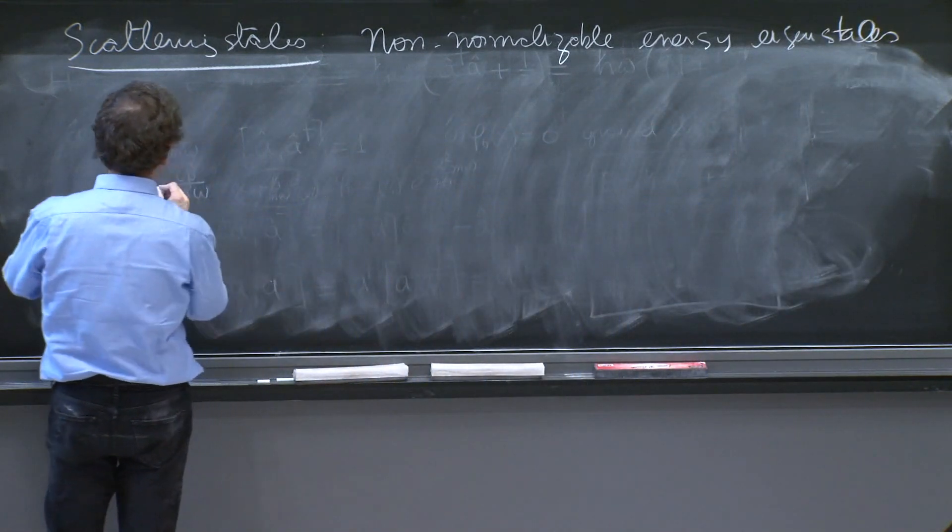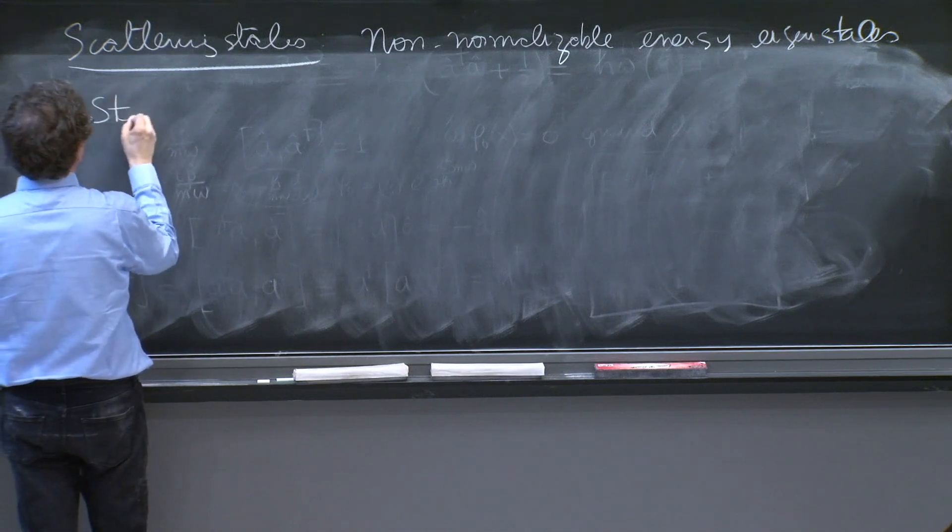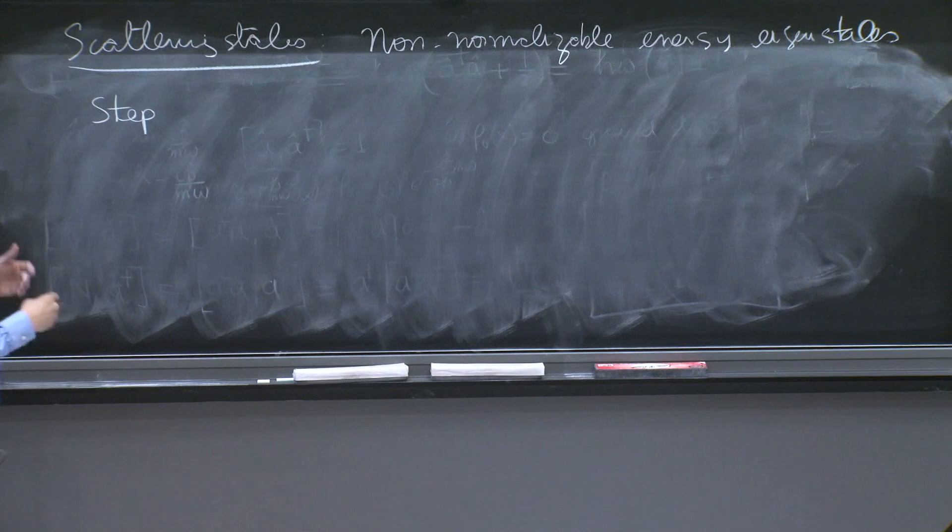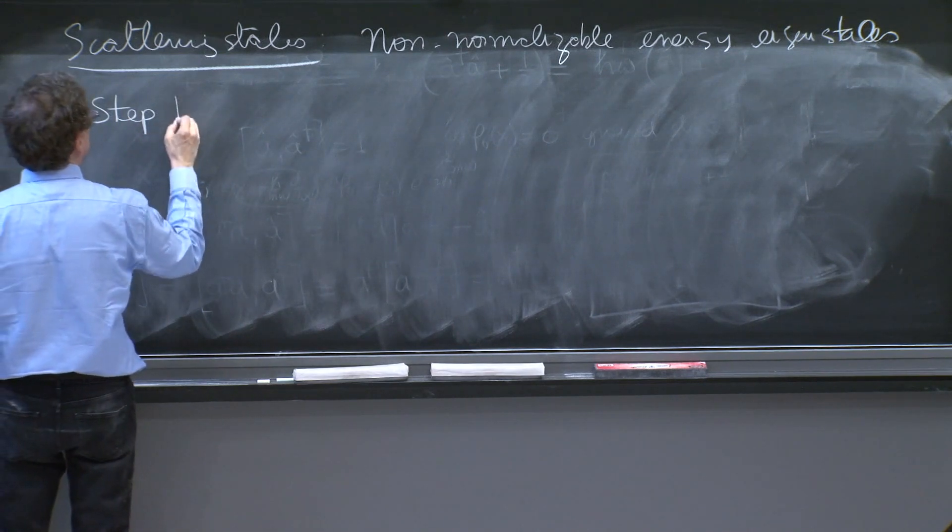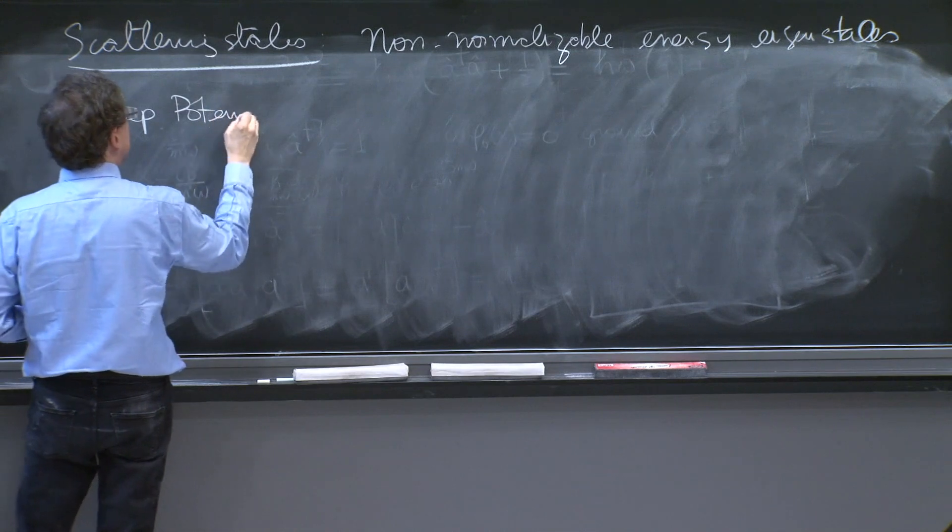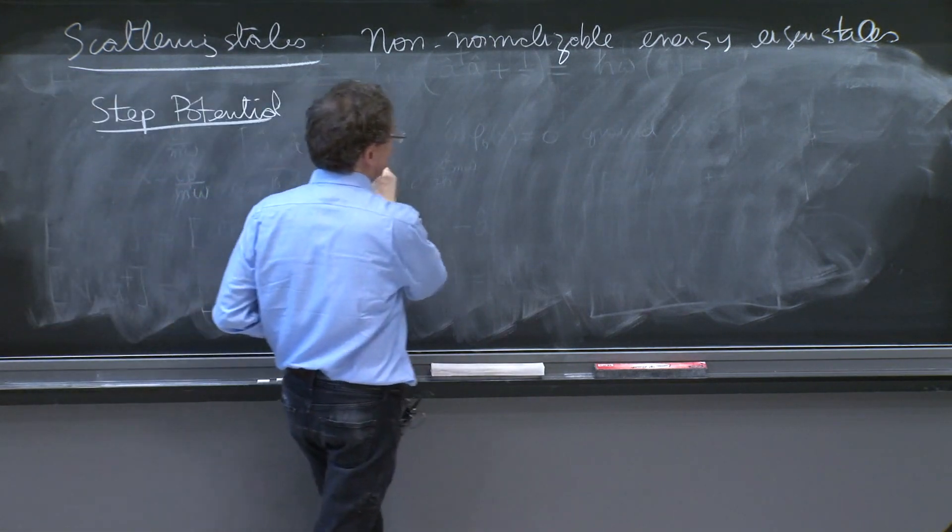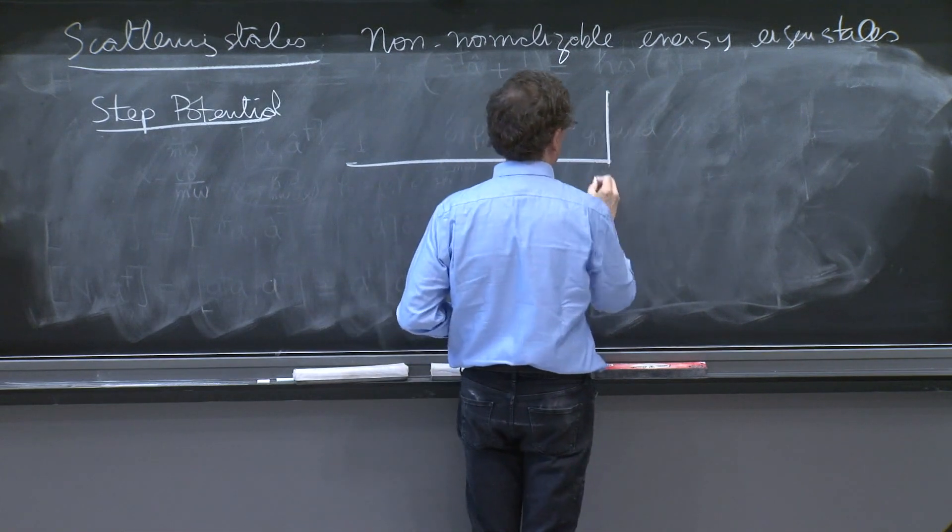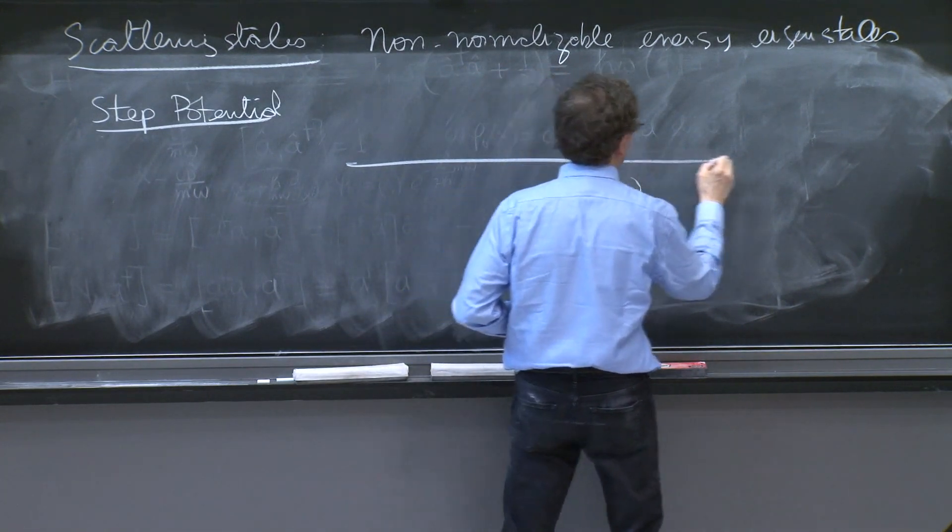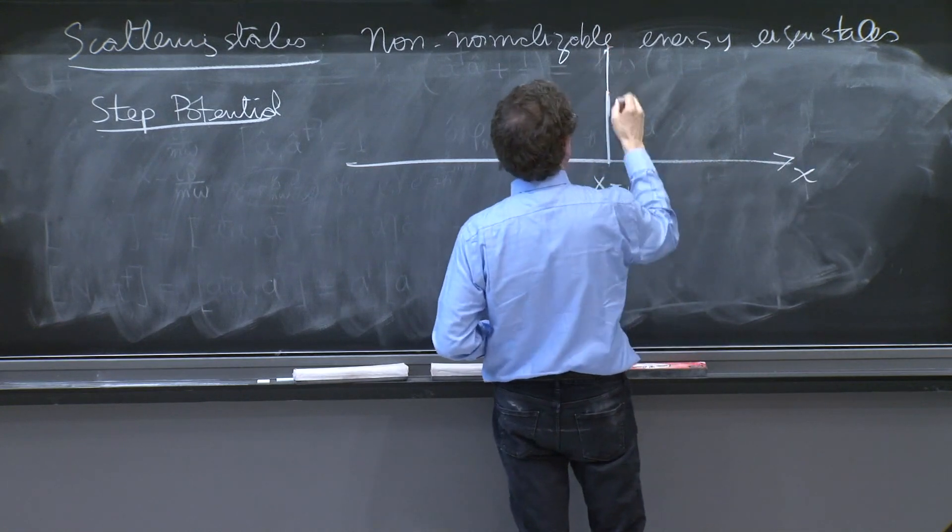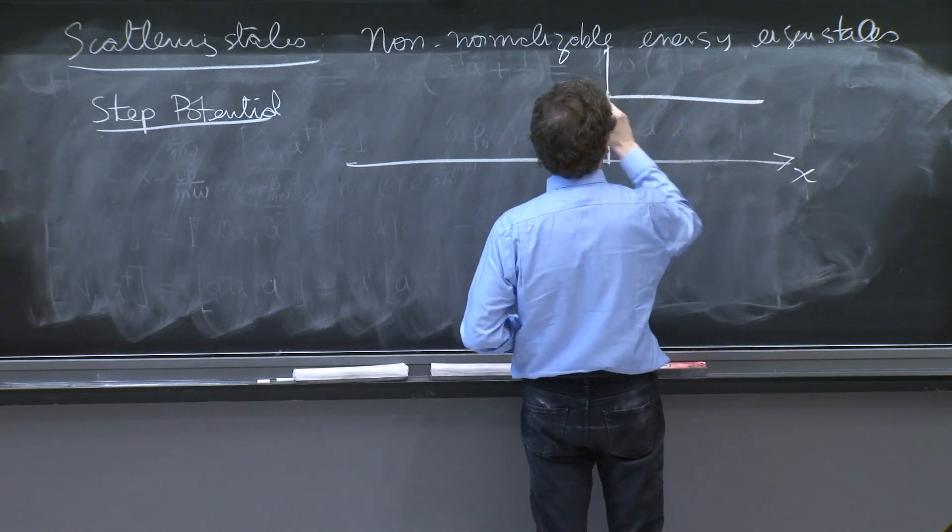And you've played a little with some of them. And we'll now study one case in detail. We'll study a couple of cases between today and next lecture. So the step potential. And the step potential is a potential that is 0 up to x equals 0. And here's the x-axis. And then suddenly there's a step at v0.